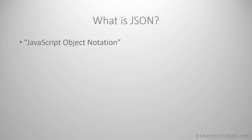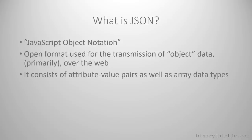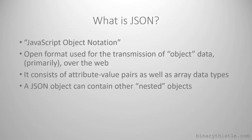So what is JSON? Well, it stands for JavaScript Object Notation, and it's effectively an open format used for the transmission of data or object data over the web. You make a call to a REST API and you're going to get information back - maybe one object, maybe multiple objects, could be details of people or fault tickets - basically serialized data in a structured format. It consists of attribute-value pairs as well as array data types. A JSON object can also contain other nested objects.